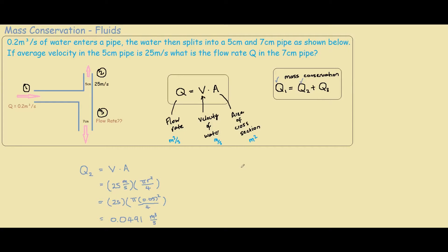Now that we have Q1 and Q2, we can find Q3. Q3 equals Q1 minus Q2. Q1 is 0.2 and Q2 is 0.0491. So the flow rate in Q3 is 0.151 meters cubed per second.